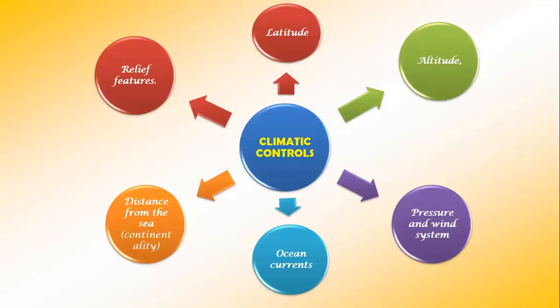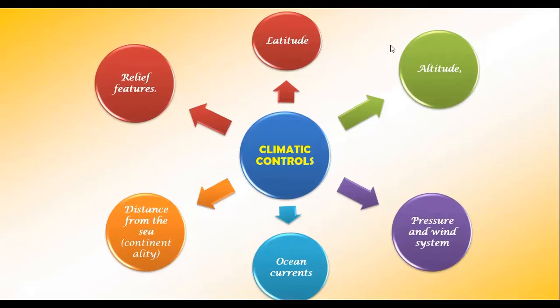Now, these are the six major controls of the climate of any place. The climate of any place majorly depends on these six factors: latitude, altitude, pressure and wind system, distance from the sea, ocean currents, and relief features.